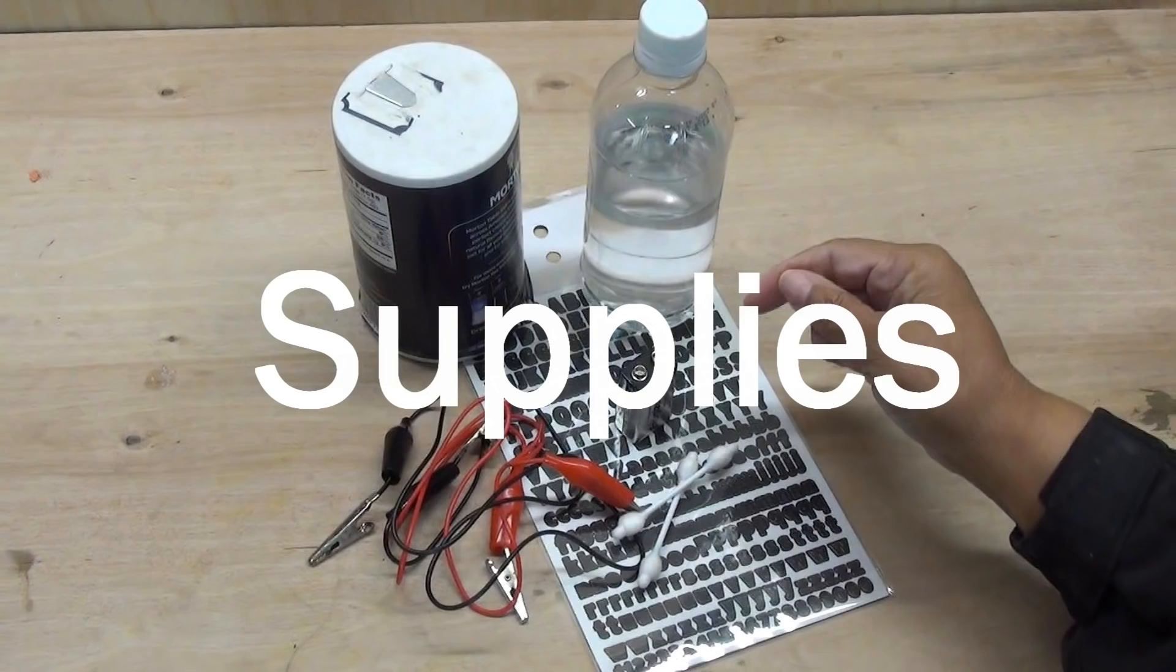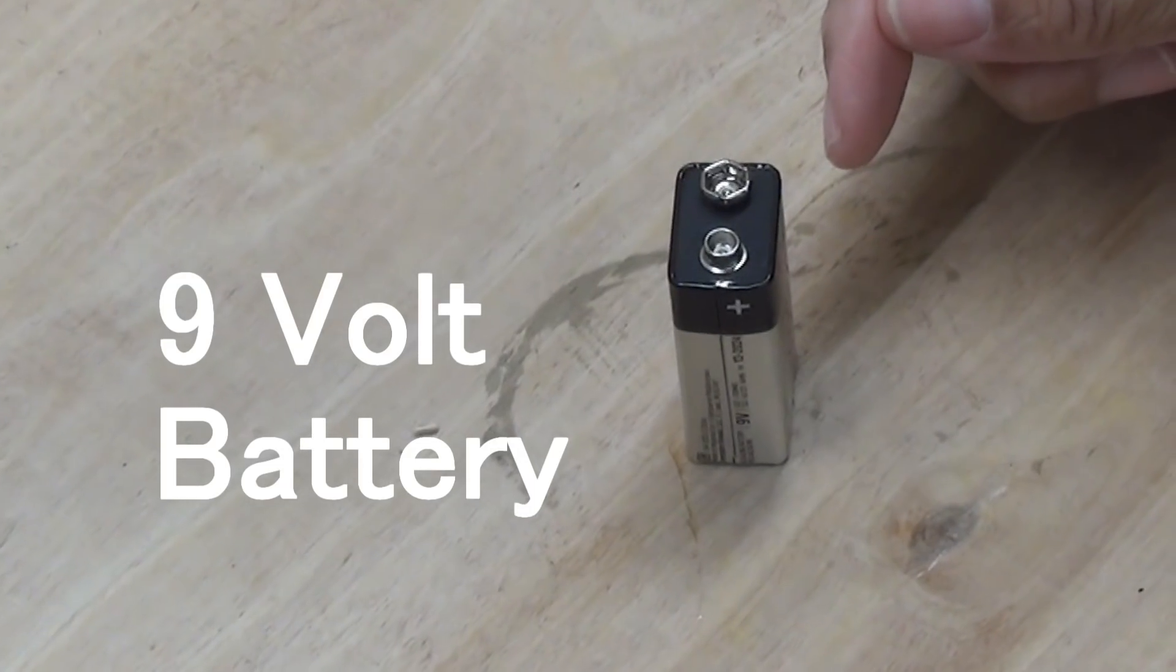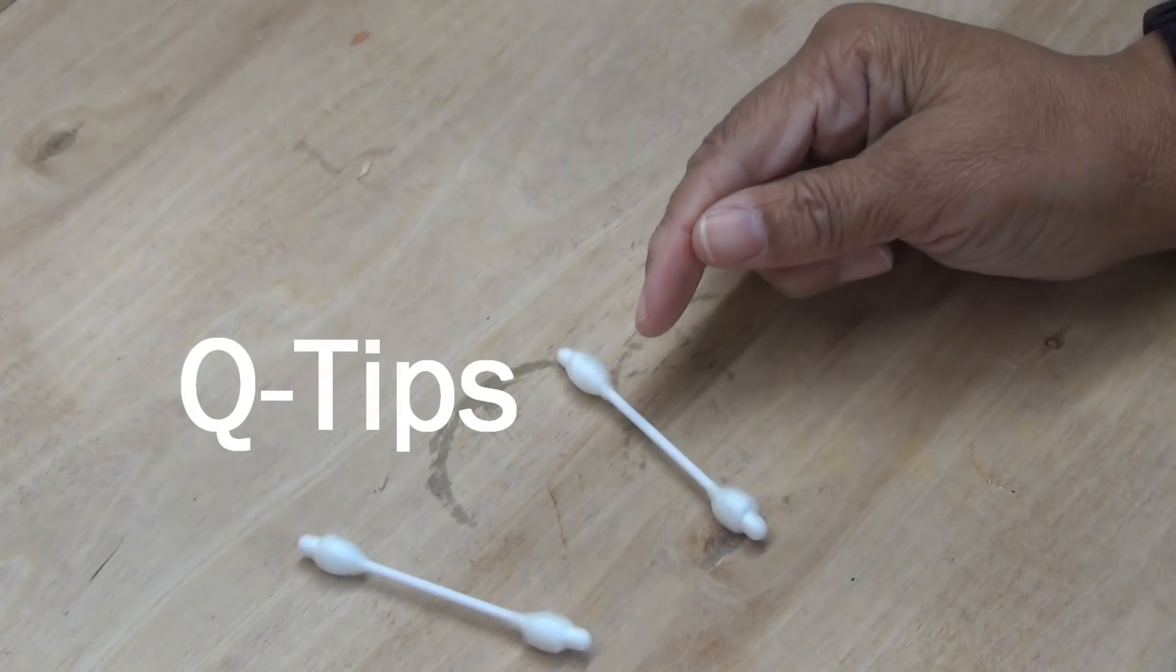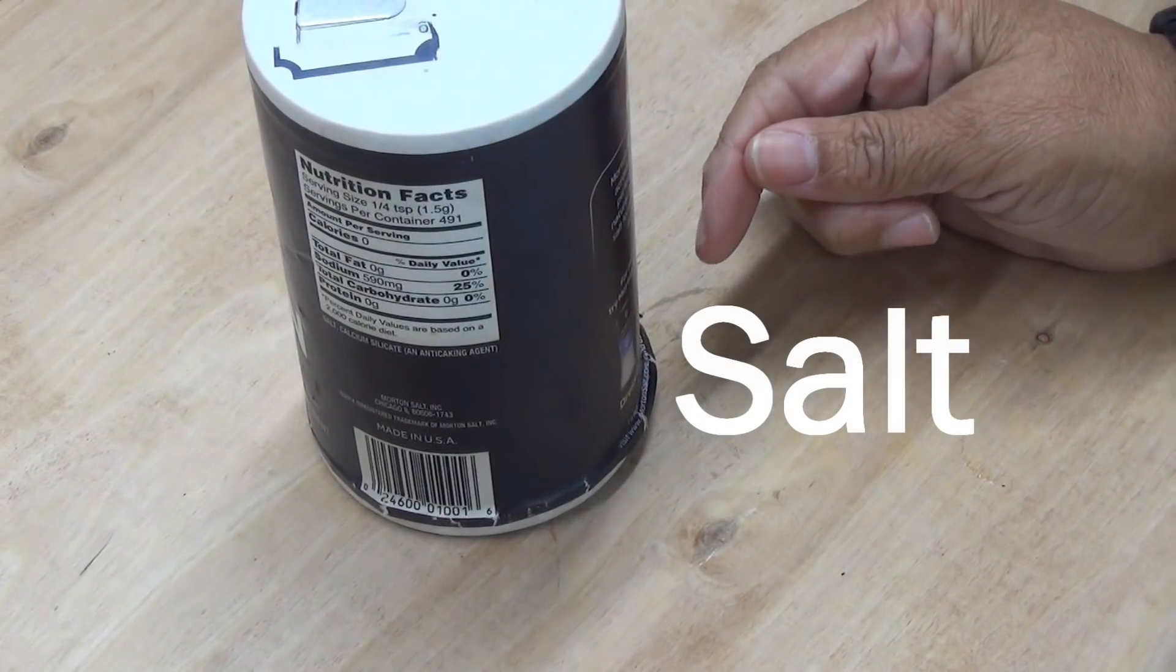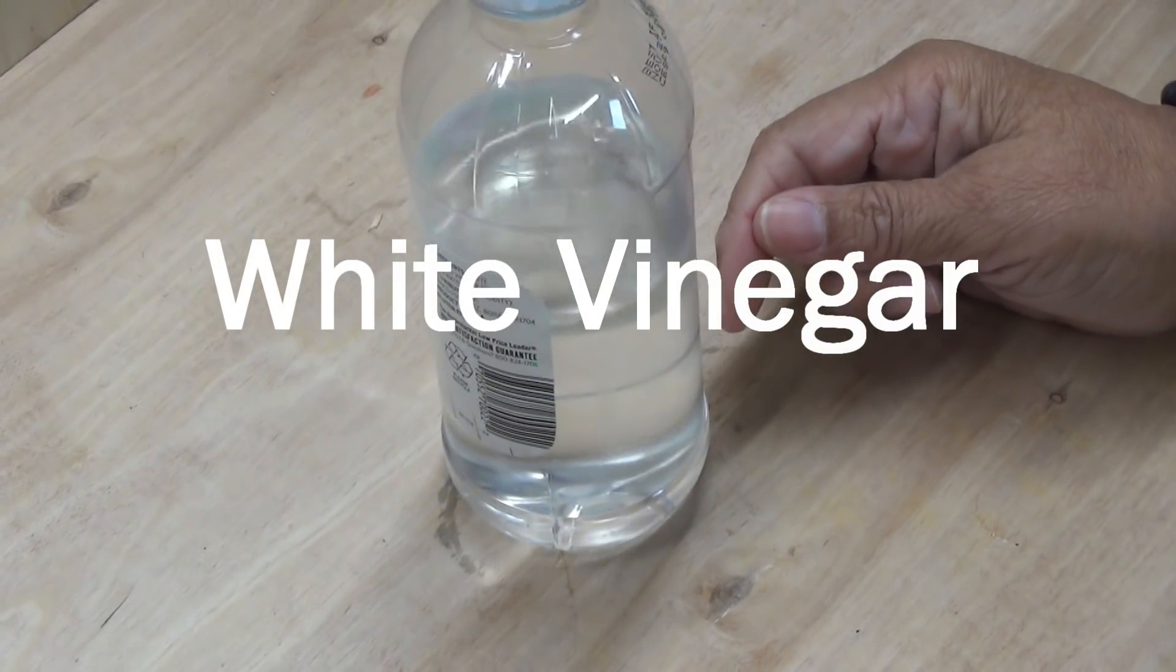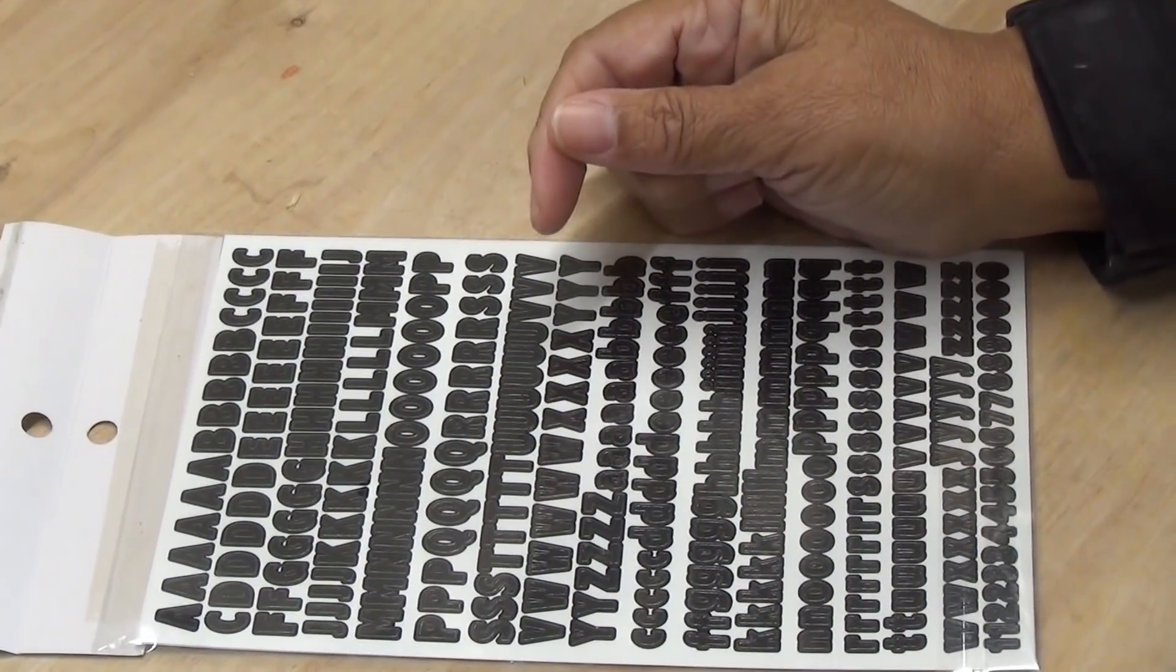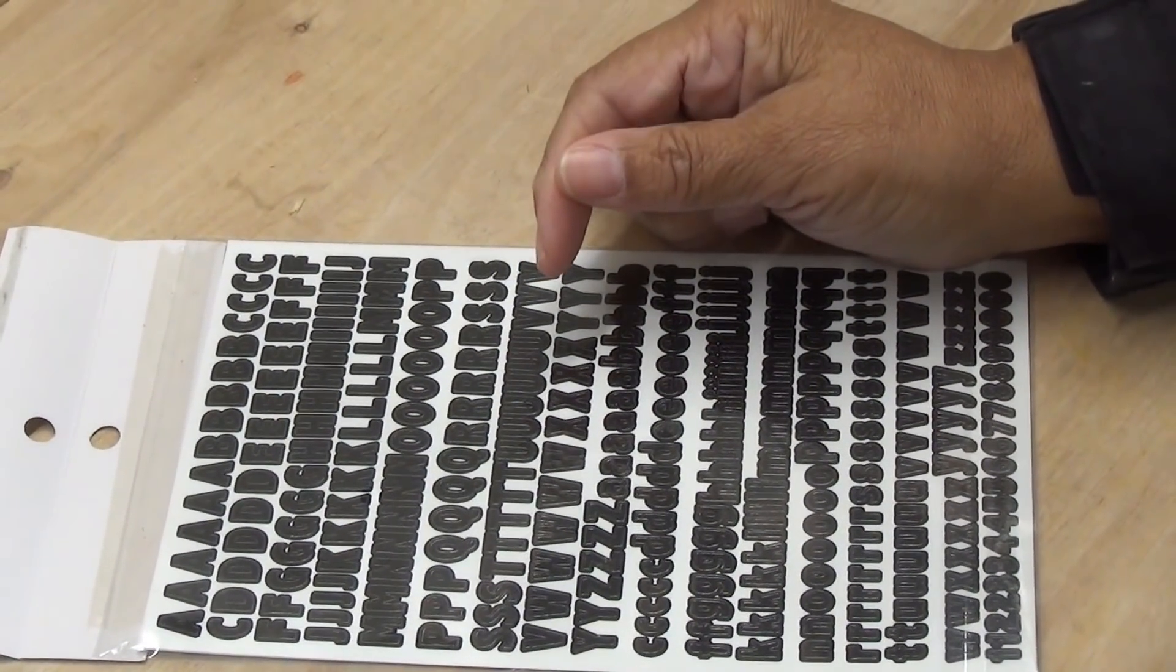You're going to need some common household items. Our power source is, of course, the 9-volt battery. You're going to need Q-tips, table salt, white vinegar, alligator clips, and you're going to need a resist. In our case, we're using vinyl letters.